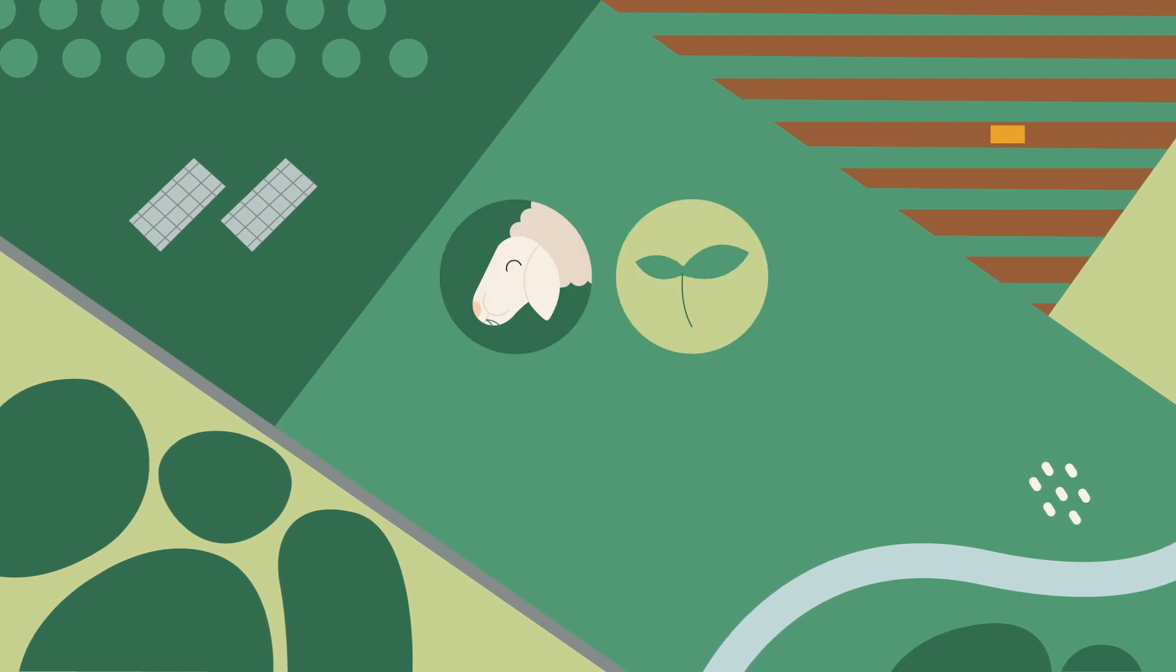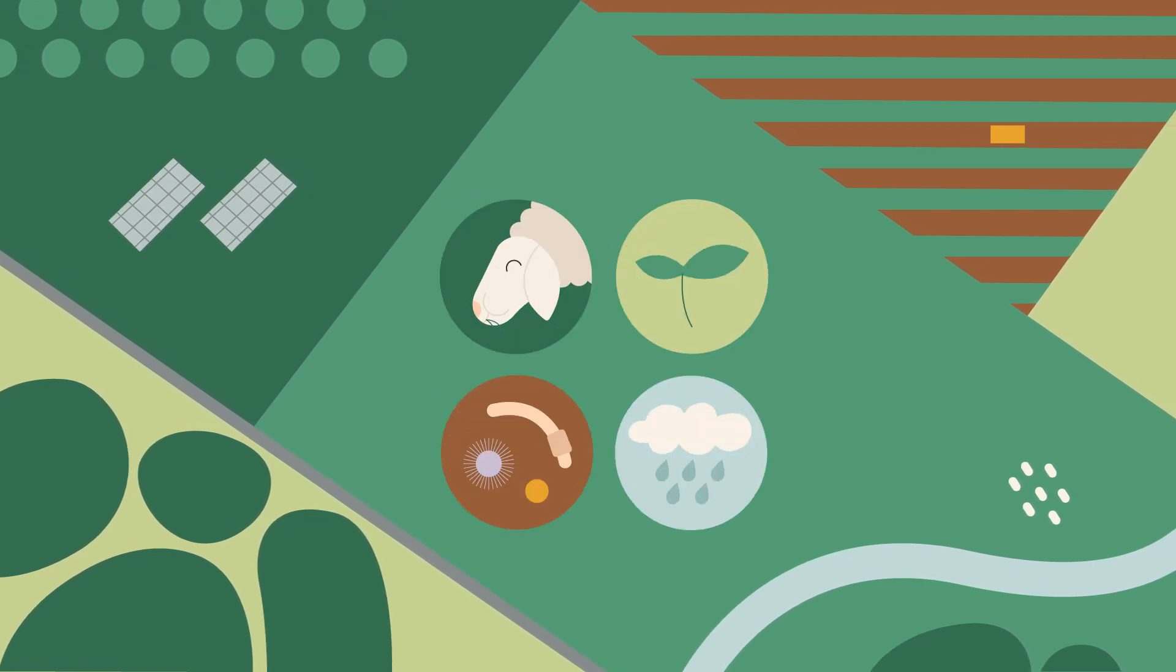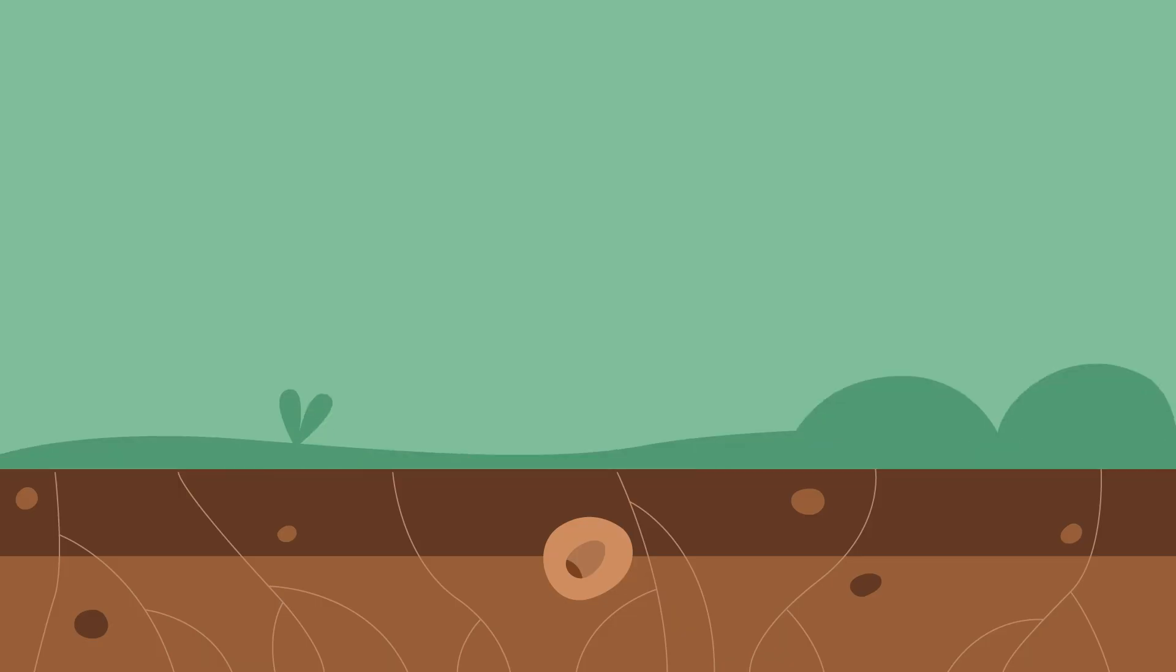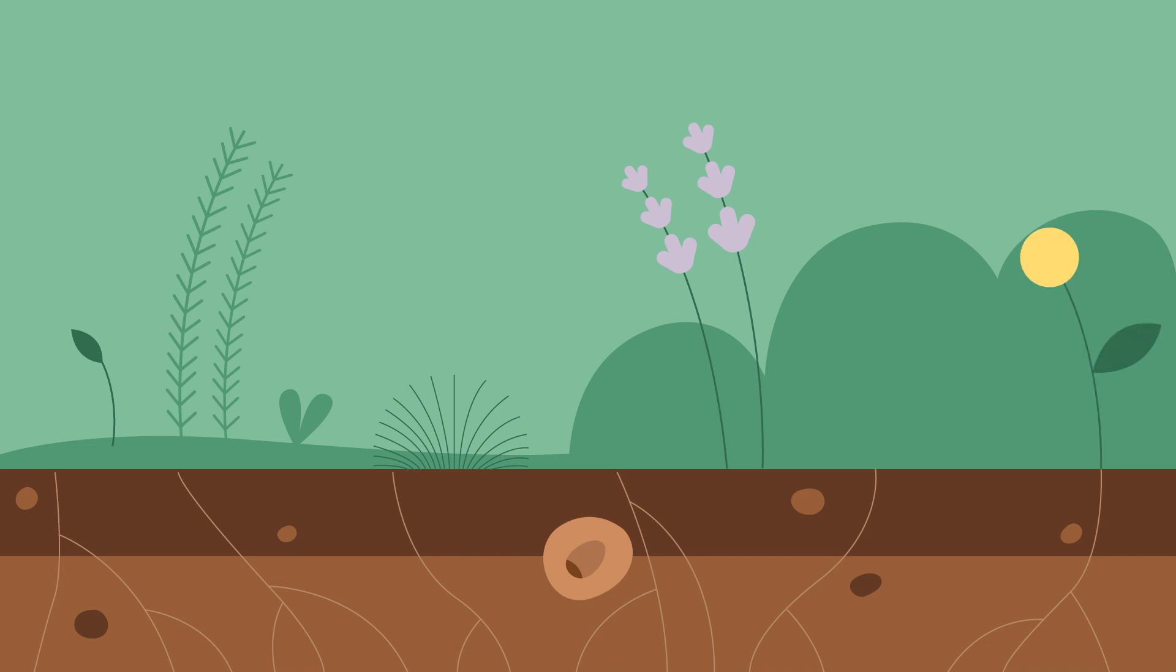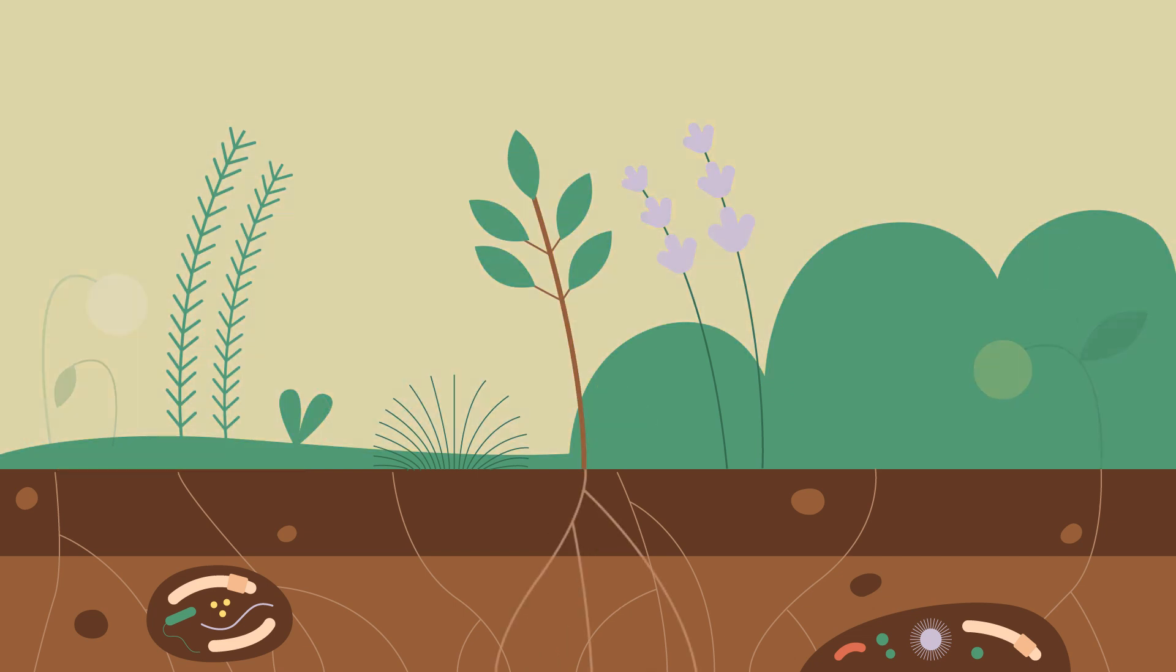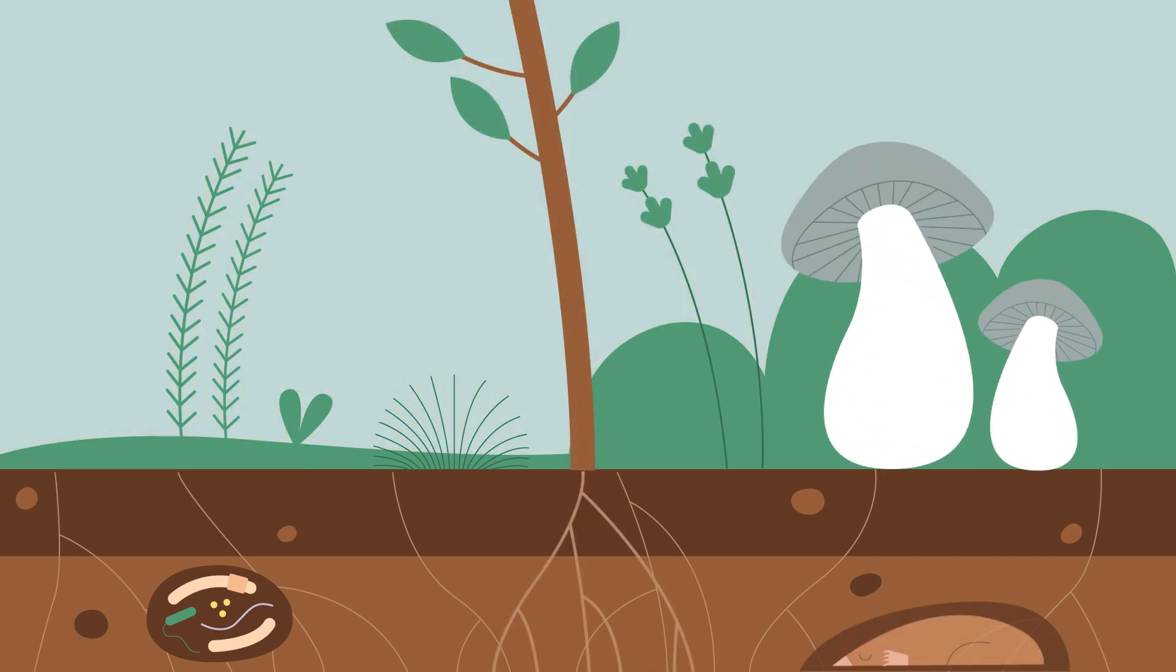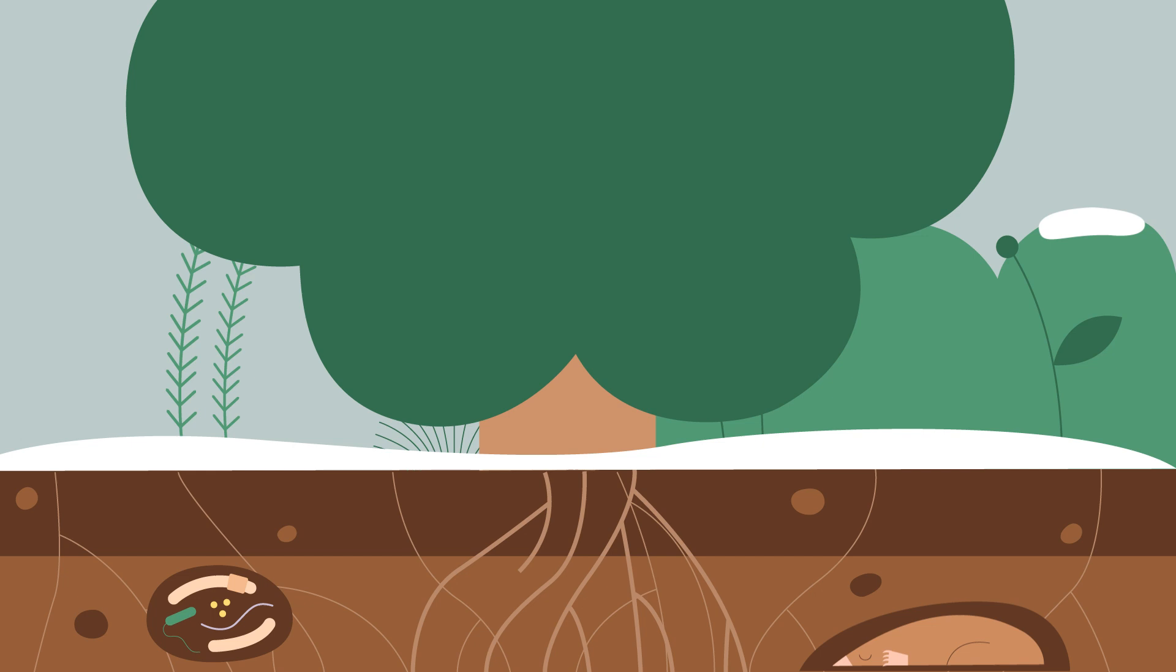Regenerative organic farming mimics natural ecosystems as closely as possible. It keeps the soil covered, protecting it like skin. It nourishes it with plant and animal matter, mirroring the natural seasons and grazer migrations. They encourage life within it, making it better at storing water and carbon.